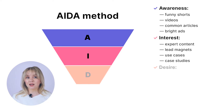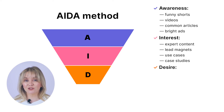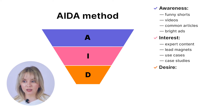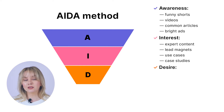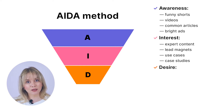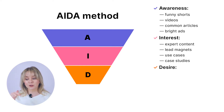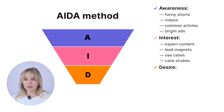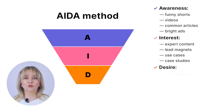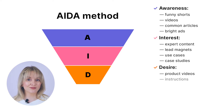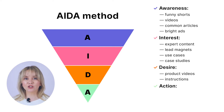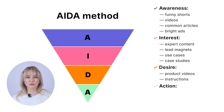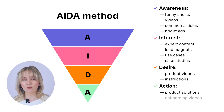Next is desire, and the desire stage is usually all about your product. Now you're going to make your audience understand that you have a product with particular benefits that people who are about to buy it should know. Usually that is a product video or some instruction. And A is for action — definitely that is the action to purchase. This content is usually about product solutions and some onboarding videos.